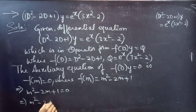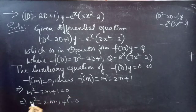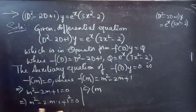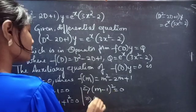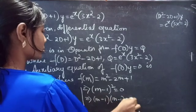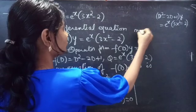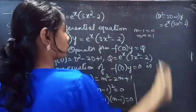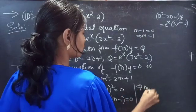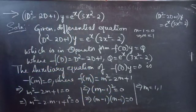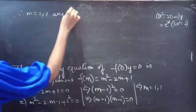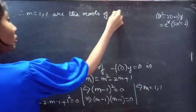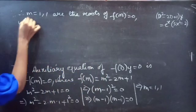We can write -2m as 2·m·1 and 1 as 1², so this is of the form a² - 2ab + b², which is the expansion of (a - b)². So we can write the LHS as (m - 1)² = 0, or (m - 1)(m - 1) = 0. Equating each factor to zero, from m - 1 = 0 we get m = 1. Since (m - 1) is repeating twice, we get two equal roots: m = 1, 1. Therefore m = 1, 1 are the equal roots of f(m) = 0.